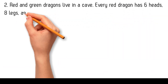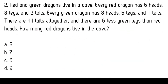Red and green dragons live in a cave. Every red dragon has 6 heads, 8 legs, and 2 tails. Every green dragon has 8 heads, 6 legs, and 4 tails. There are 44 tails altogether, and there are 6 less green legs than red heads. How many red dragons live in the cave? 8, 7, 6, 9.